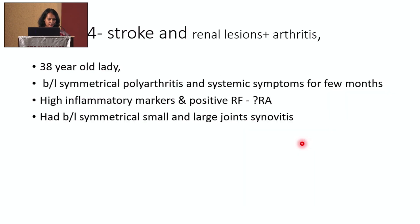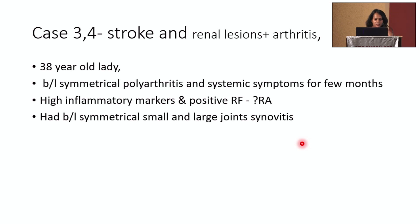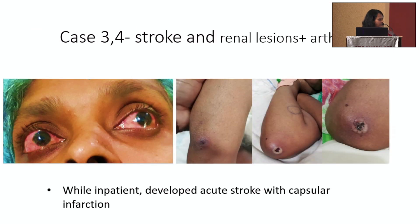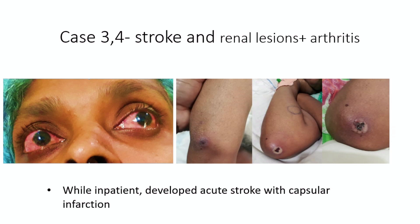Moving to the next two cases, I will discuss two patients who presented with stroke and were later diagnosed with GPA. The first is a 38-year-old lady who came in with bilateral symmetrical polyarthritis and systemic symptoms for a few months. She had high inflammatory markers and positive rheumatoid factor, and was referred to rheumatology asking whether it was rheumatoid arthritis. She had a classic joint picture of rheumatoid arthritis, however she was too ill. She had a rash and ulcerative patches over extensor surfaces. While an inpatient, after about three to four days of hospital admission, she developed an acute stroke with capsular infarction.